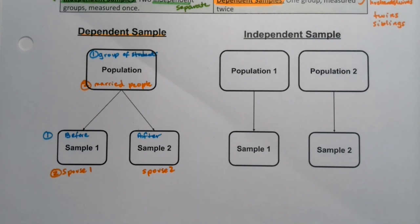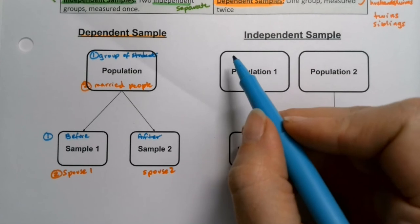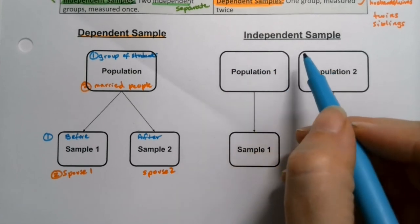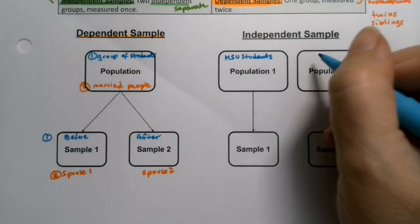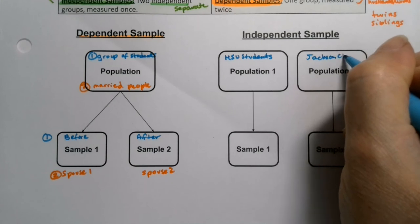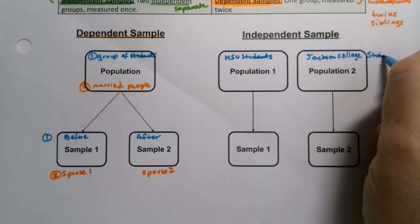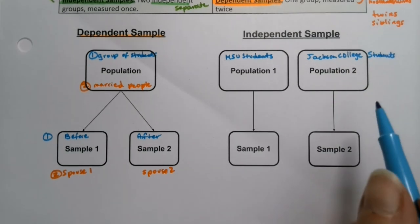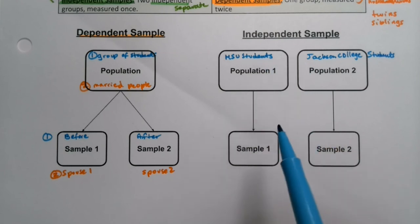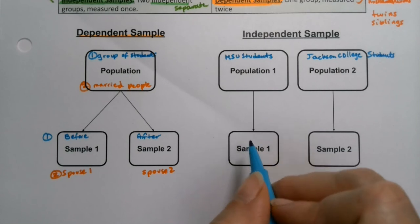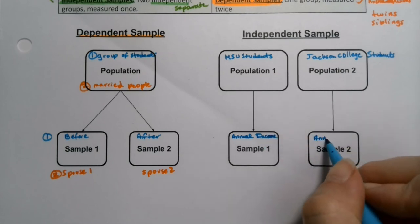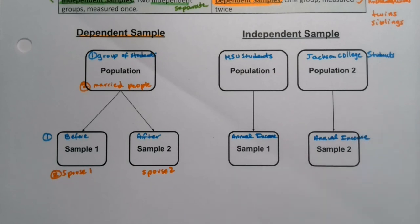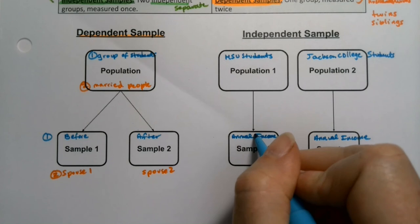An independent sample would be, for example, one type of student and another type of student that don't have anything to do with each other. You could have MSU students — Michigan State University — and Jackson College students. Two separate groups that don't really have anything to do with each other. Then sample one gets their annual income measured versus the annual income for the other group of students — that would work.